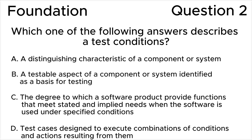ISTQB foundation level question 2: Which one of the following answers describes a test condition? A) A distinguishing characteristic of a component or system. B) A testable aspect of a component or system identified as a basis for testing. C) The degree to which a software product provides functions that meet stated and implied needs when the software is used under specified conditions. D) A test case designed to execute combinations of conditions and actions resulting from them.